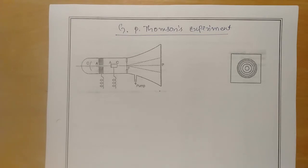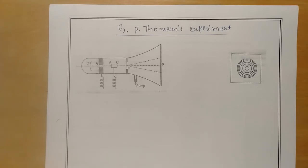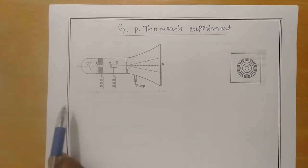For macro objects it is difficult to measure the de Broglie wavelength, but for atomic and subatomic particles it is easy to measure. Here, by using atomic and subatomic particles, we try to prove that material particles — electrons, protons, neutrons — when in motion, are associated with certain wave nature. Let us look into the experimental arrangement of the G.P. Thompson experiment.